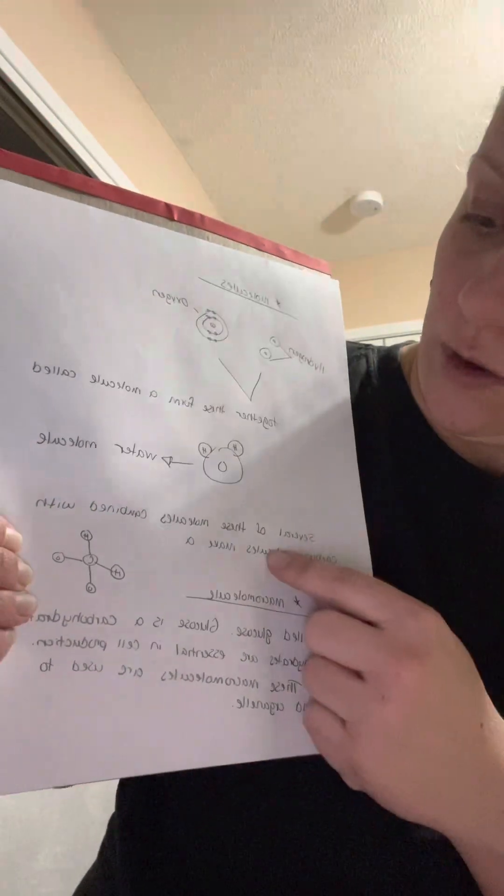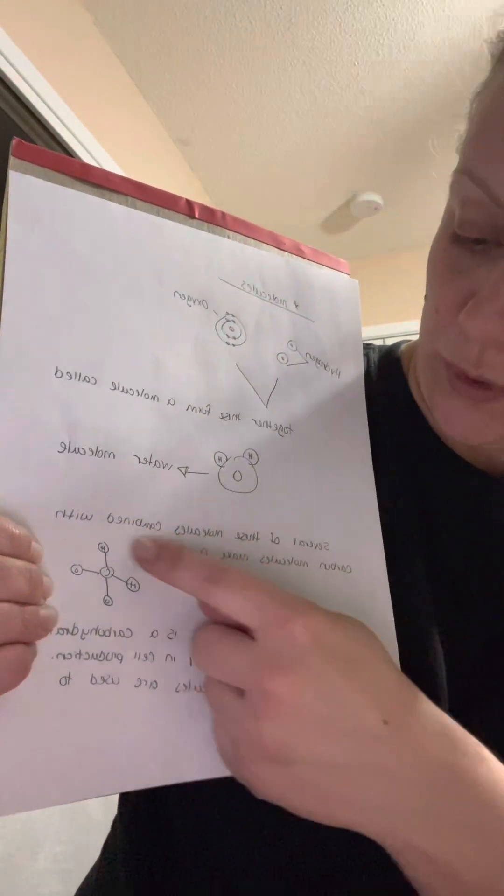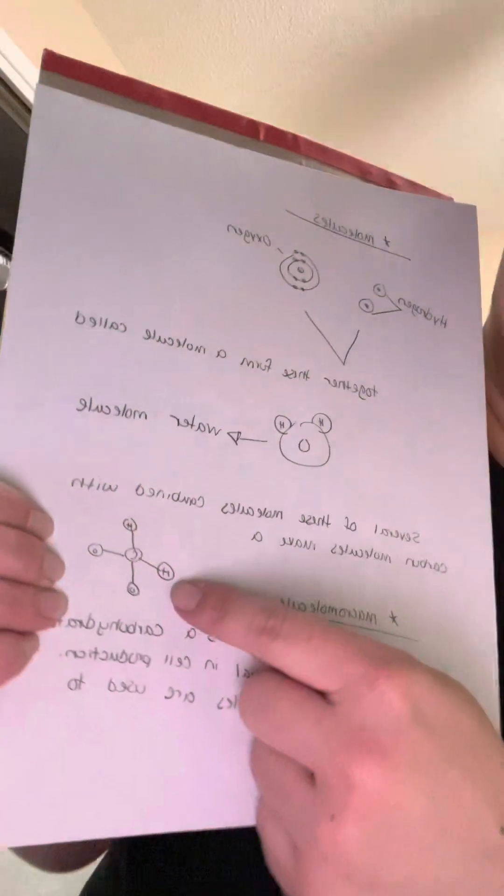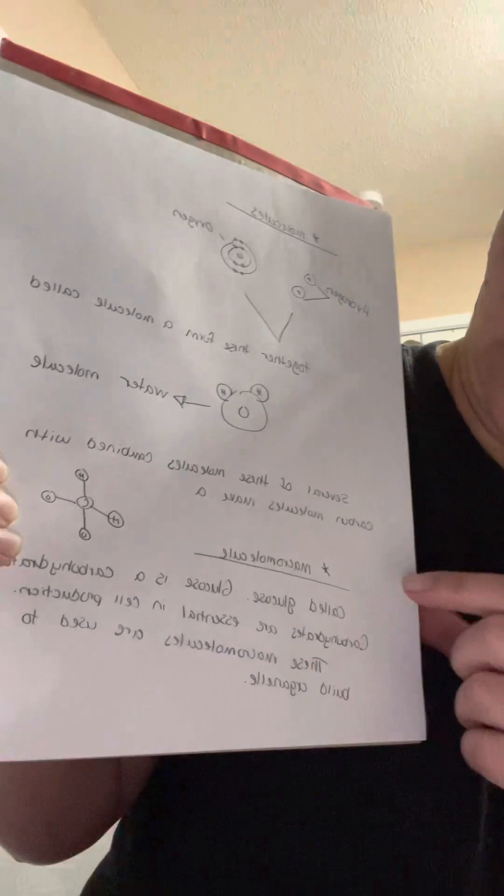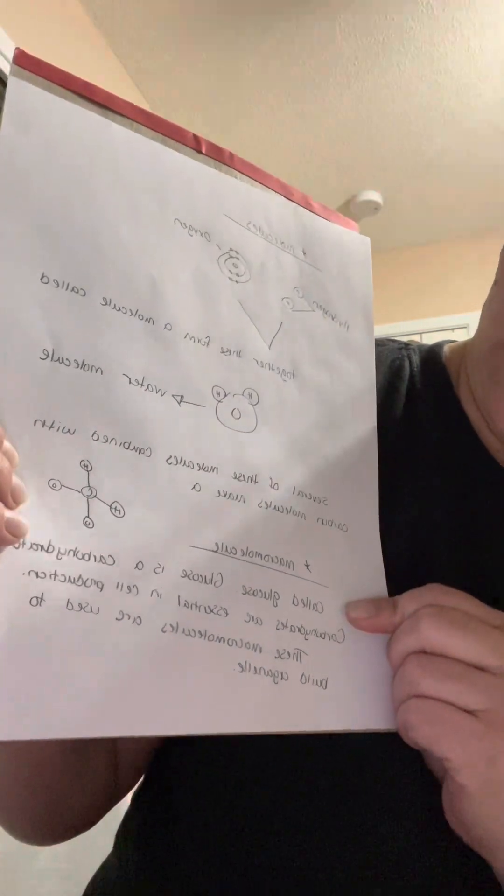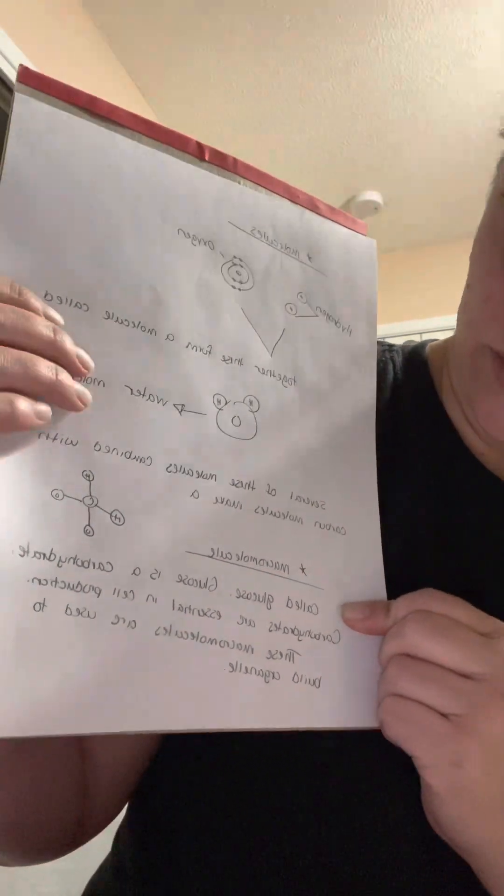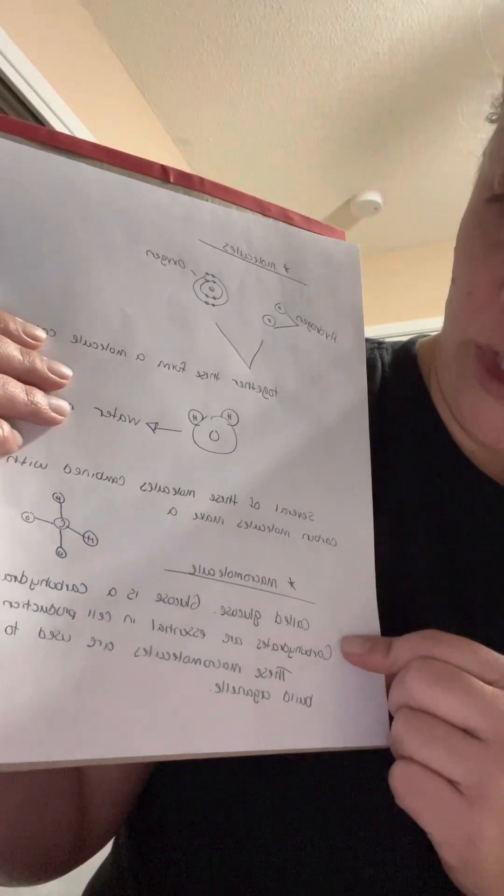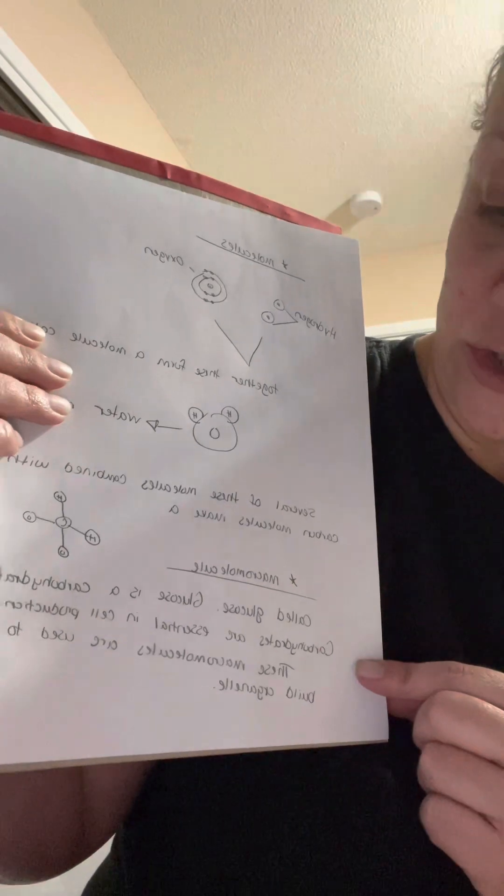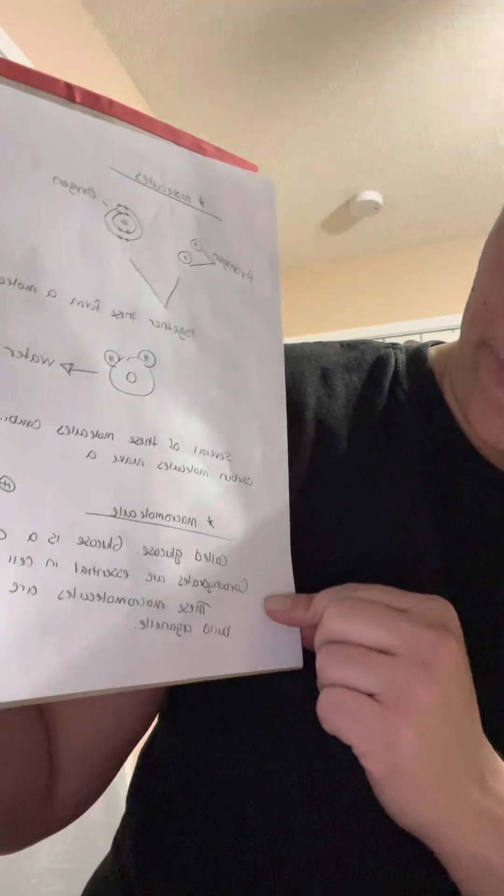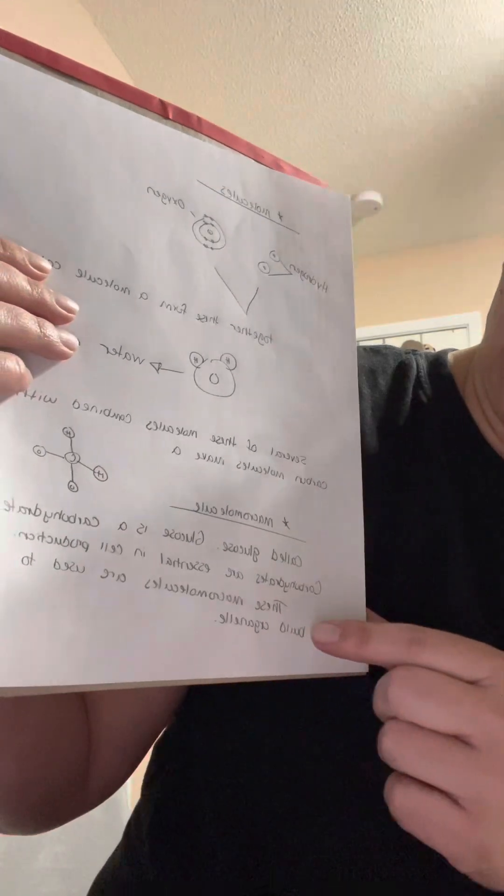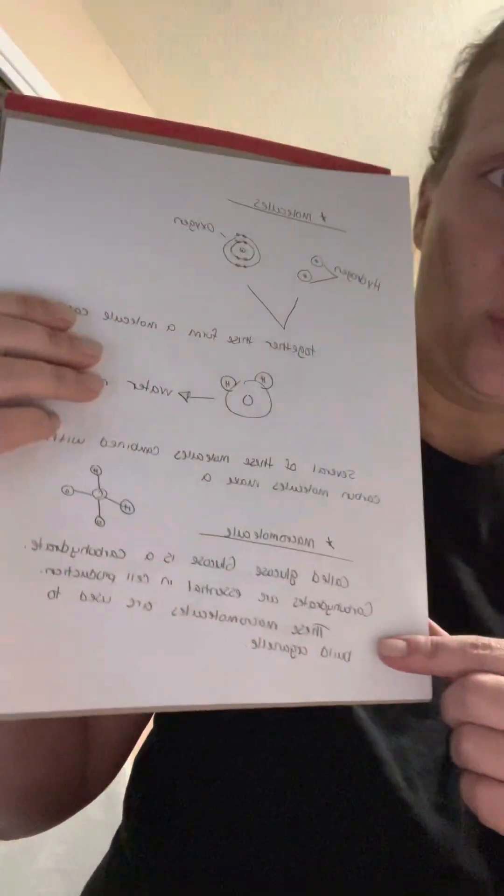Several water molecules combined with carbon make a macromolecule. Glucose is the macromolecule which is a carbohydrate, and carbohydrates are essential in production of cells. These macromolecules are used to build organelles.